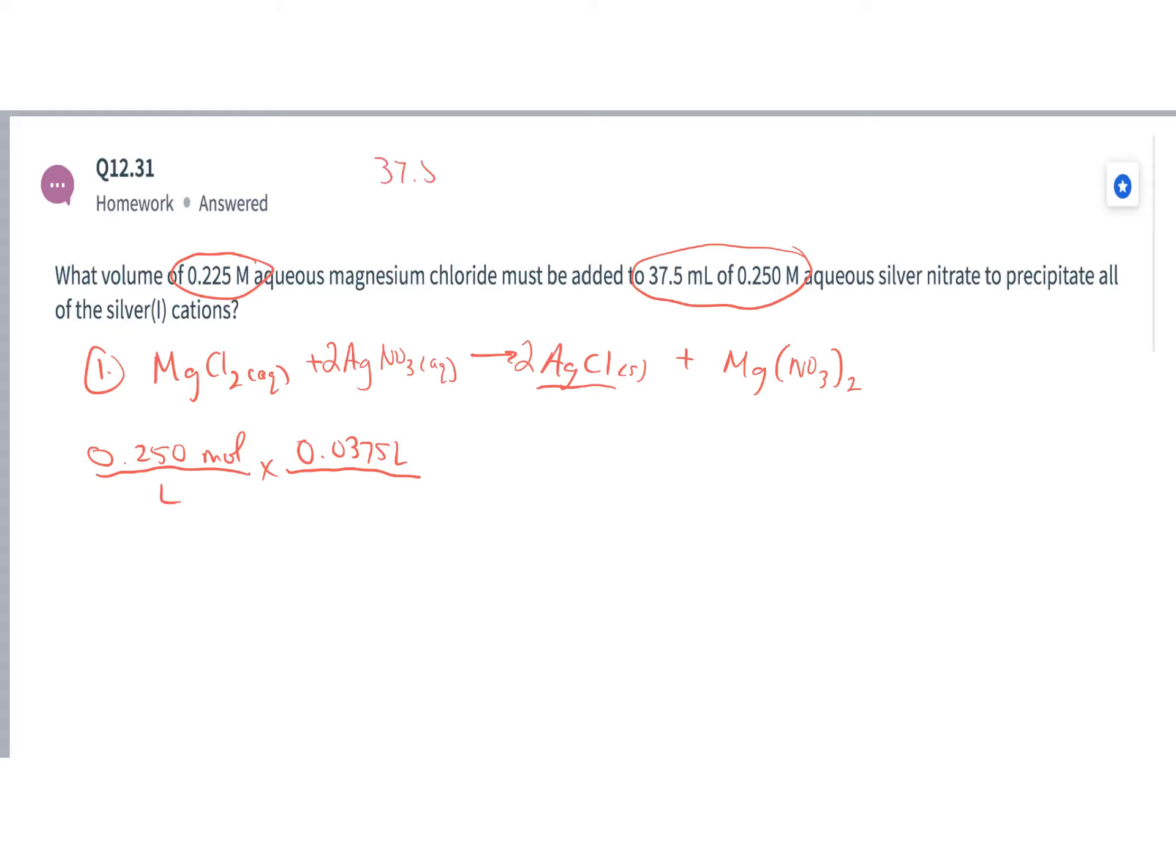37.5 milliliters, I know that I have 1000 milliliters in 1 liter, so divide that by 1000, 0.0375 liters. So how many moles of silver do I have in this 37.5 milliliter solution? I have approximately 0.009375 moles of silver.